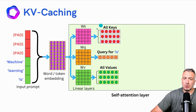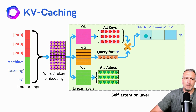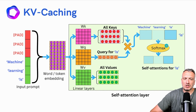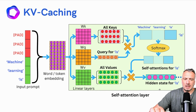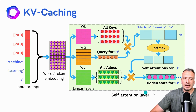We need all the keys that relate to all the tokens in the input sequence, and we need all the values that relate to all the tokens in the input sequence. But for the query, to generate the next token, you only need the query vector that relates to the last token. So we build an interaction vector between the query of the word 'is' and the keys of the other tokens. We pass this interaction vector through a softmax transformation and get the self-attention for the word 'is.' We use this self-attention to build a weighted average of the values of all the input tokens to get the hidden states for the token 'is.' To compute this hidden state, we need all the keys and all the values of all the input tokens.